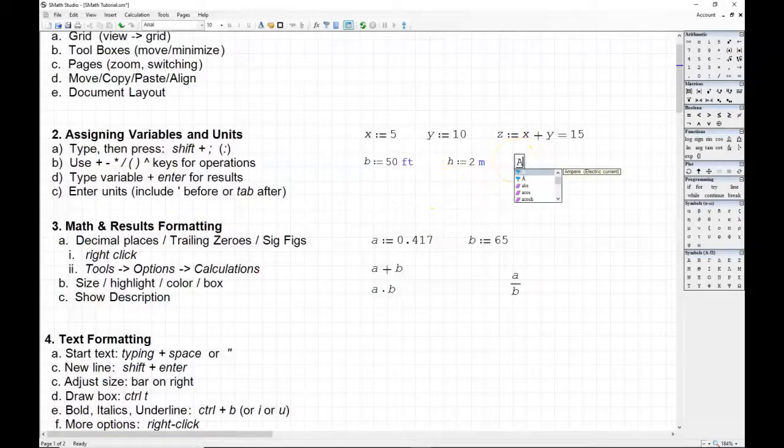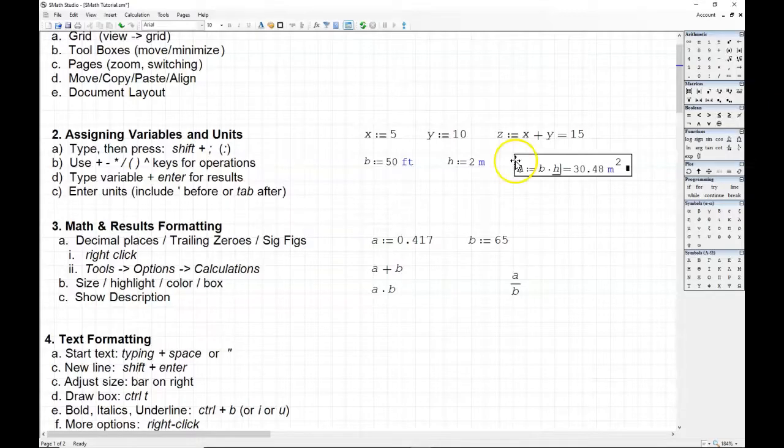To find the area, we'll make a new variable A. And then we'll assign that using the colon operator. Shift semicolon. And B times H. So B asterisk H. We'll type the equal sign. And we see that SMath has automatically converted the feet into meters. And then multiplied that by 2. What we can do here is we can even see what B is in meters. So I'll type B equals. And we see that it's 15.2 meters. And so 15 times 2 is about 30. And that's what we see for our result.